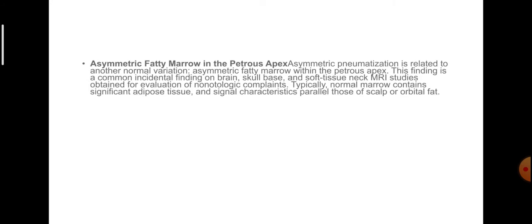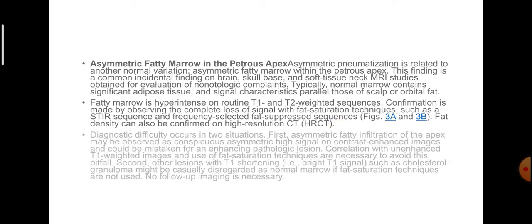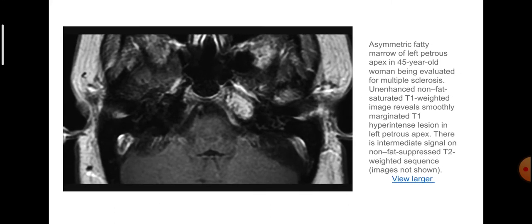Asymmetric fat marrow in the petrous apex: Asymmetric pneumatization is related to another normal variant — asymmetric fat marrow within the petrous apex. This is a common incidental finding on brain, skull base and soft tissue neck studies. Normal marrow contains significant adipose tissue. Fat marrow is hyperintense on routine T1 and T2 weighted sequences, with complete loss of signal on fat saturation techniques such as STIR and frequency-selected fat suppression sequences. This shows asymmetric fat marrow in the left petrous apex in a 45-year-old woman being evaluated for multiple sclerosis. The unenhanced non-fat-saturated T1-weighted image reveals smoothly marginated T1-hyperintense lesion in the left petrous apex.